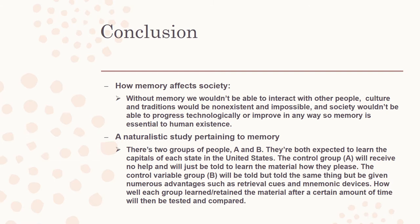An example of a naturalistic study involves two groups of people, A and B, both expected to learn the capitals of each state in the United States. The control group A will receive no help and will be told to learn the material however they please. Group B will be told the same thing but given numerous advantages such as retrieval cues and mnemonic devices. How well each group learned or retained the information after a certain amount of time will then be tested and compared.